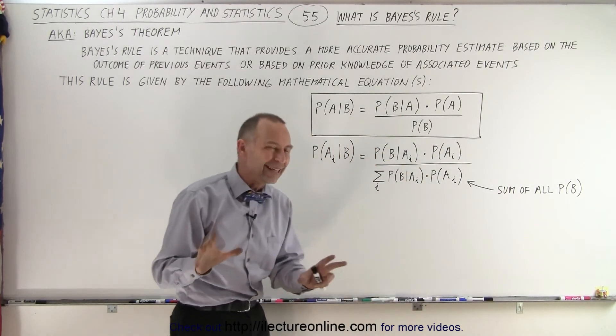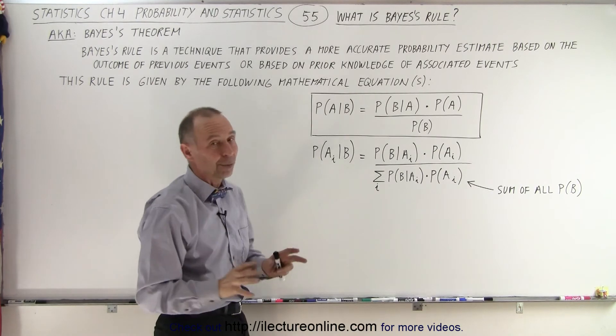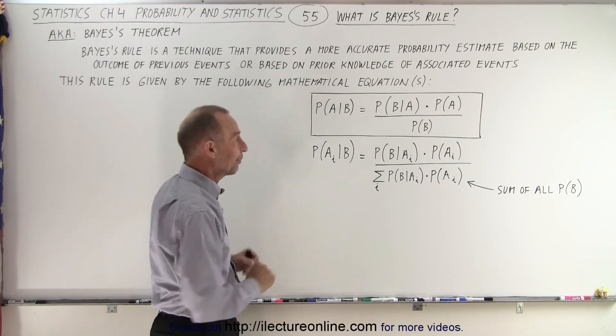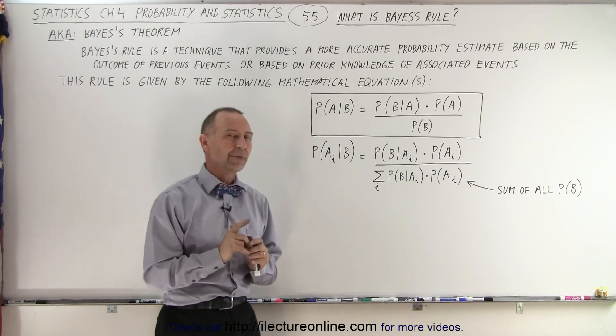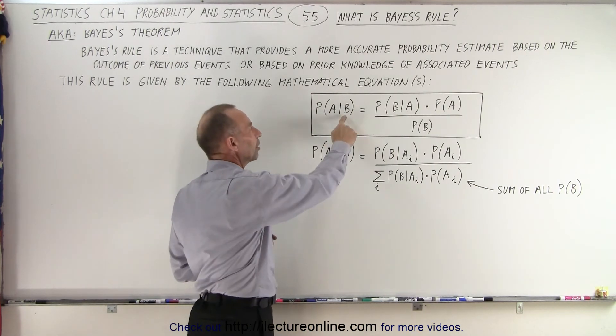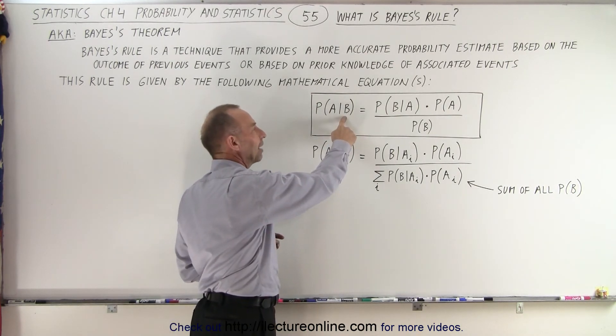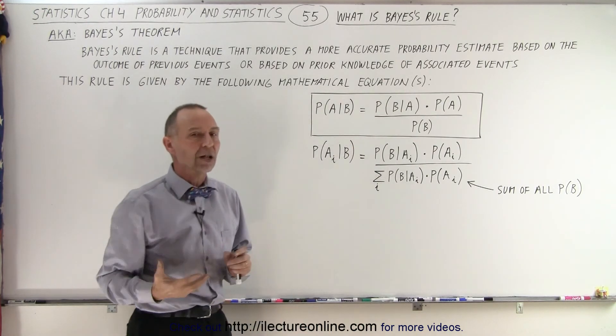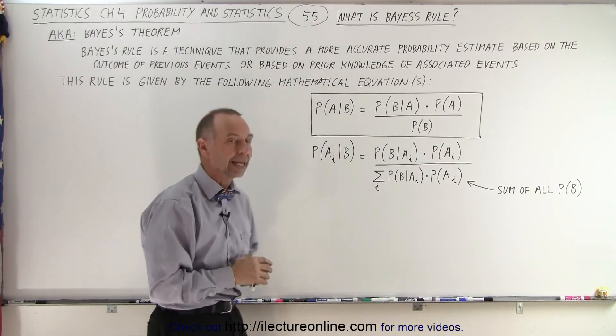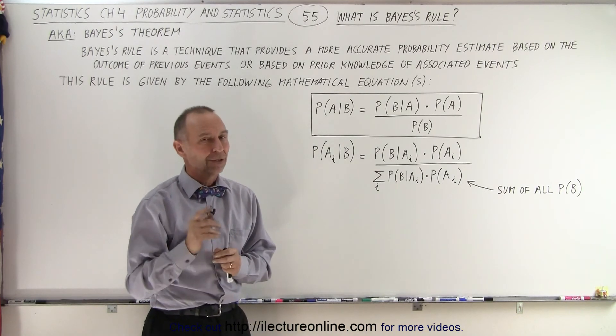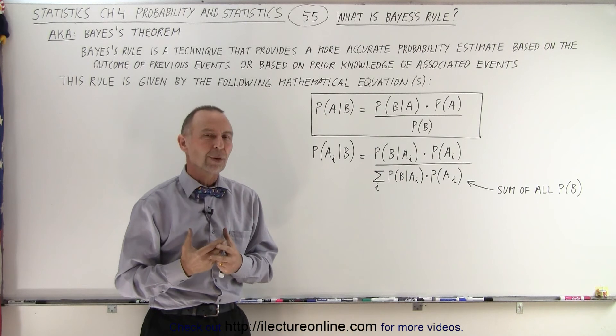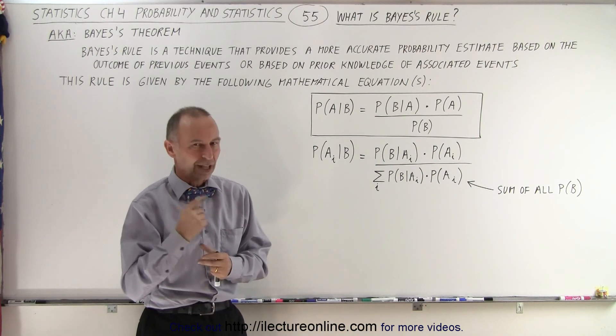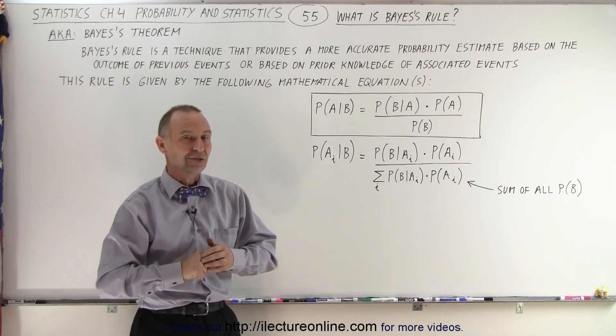Again, right now that may not seem like it makes any sense, but with some examples it will make perfect sense. Just understand that it's a really good way to find the probability given knowledge about some event that has already occurred, plus some other prior knowledge that may go into calculating this probability. You'll see when we see the examples that it's really a marvelous way to find the probability of something, so stay tuned and we'll show you how it actually works.